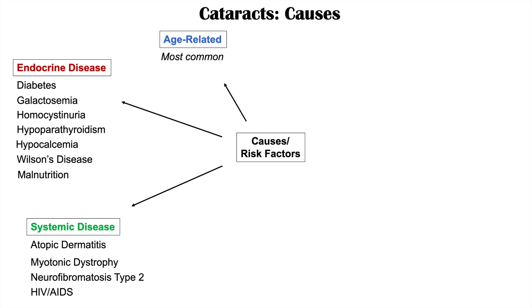Another category is systemic diseases in general. Atopic dermatitis is associated with an increased risk of cataracts, as is myotonic dystrophy, neurofibromatosis type 2, and HIV/AIDS. Why HIV or AIDS increases the risk is not completely known — it could be the medications people take for these conditions.